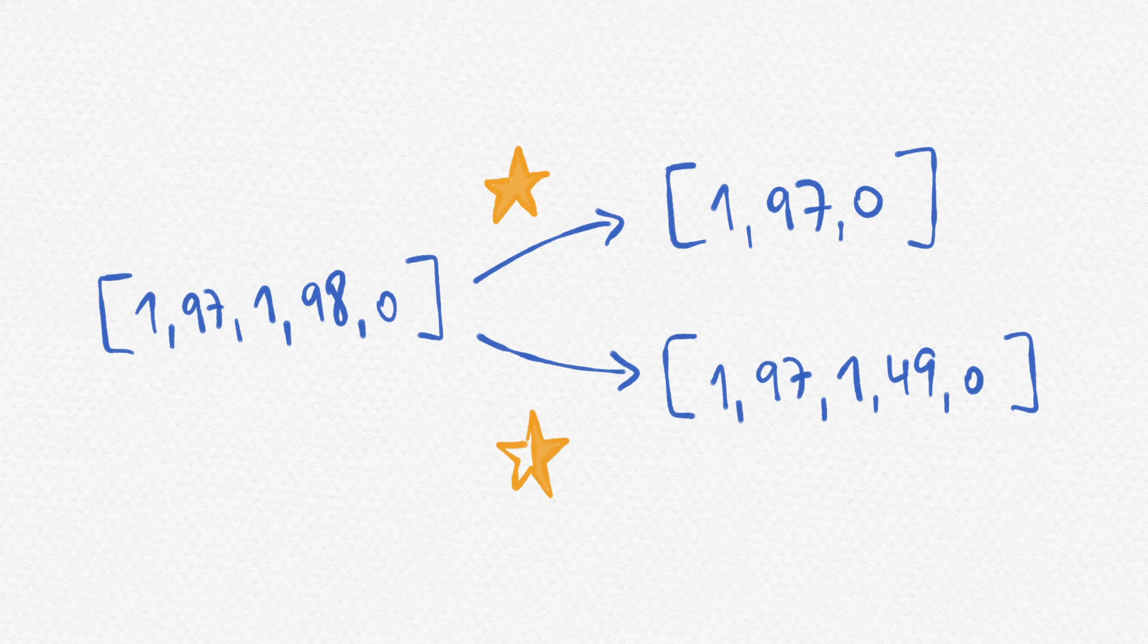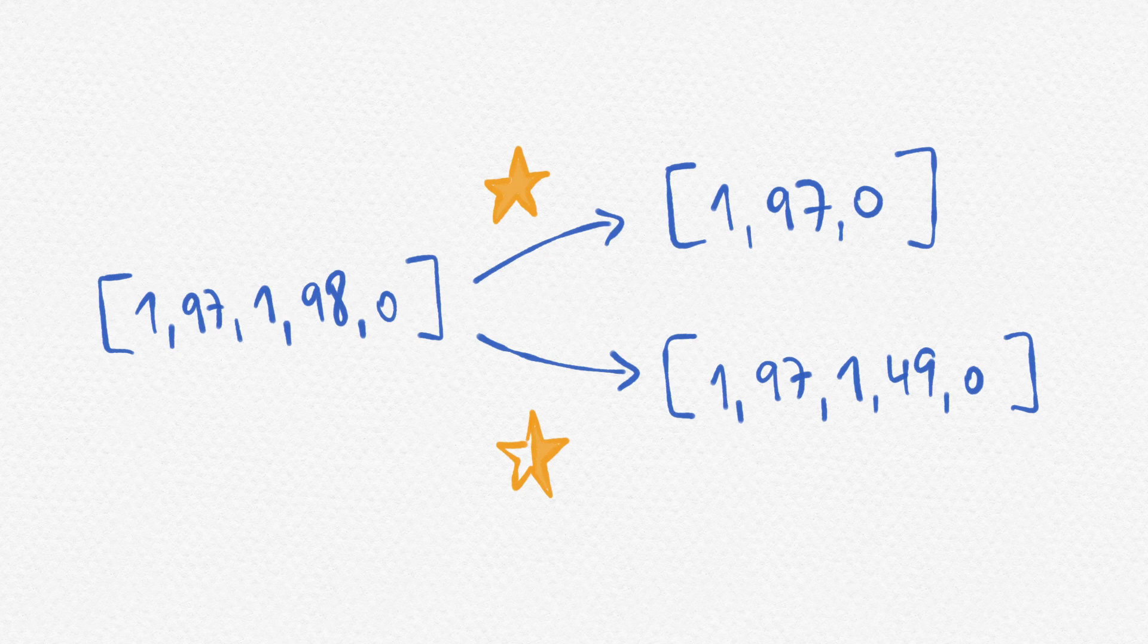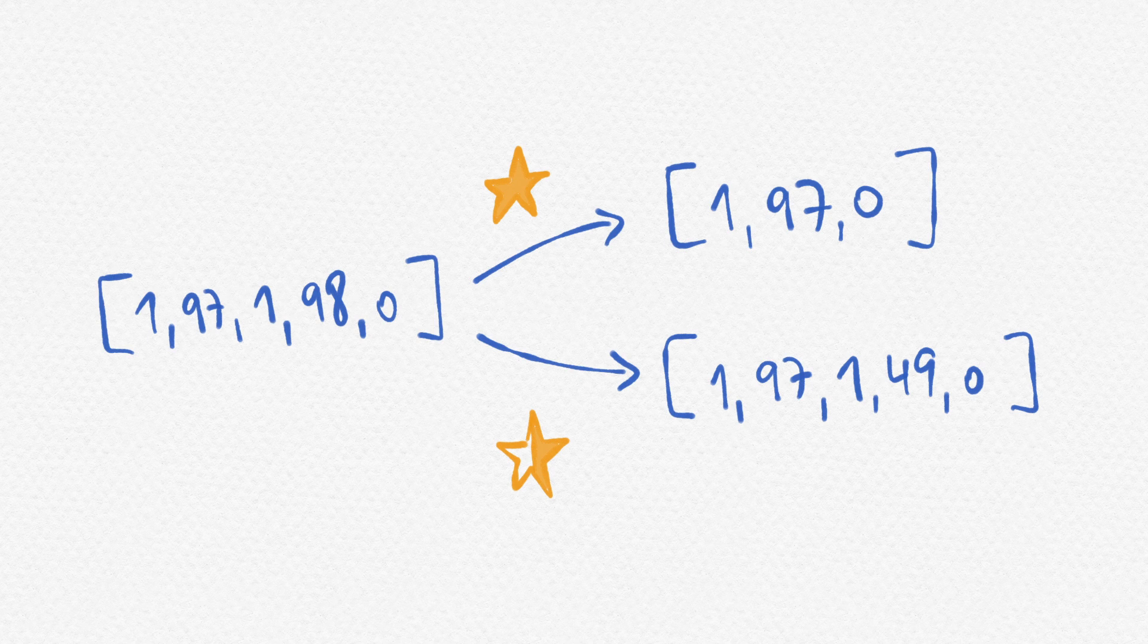So internally such a library will have a bunch of strategies, like try to remove some numbers from the list, try to replace some numbers with 0, try to subtract 1 from them, and so on.